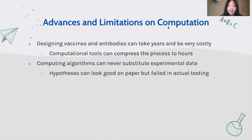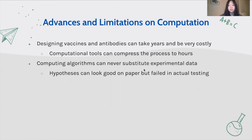Computational tools largely make the vaccine design process more efficient. Before, it took years and cost millions to design vaccines, but with computation, this process can be compressed into hours. However, no matter how precise the algorithms are, they can never substitute experimental data. Hypotheses may look well on paper but fail on actual testing. Thus, even though computational immunology can help advance the vaccine design process, it is never a shortcut.